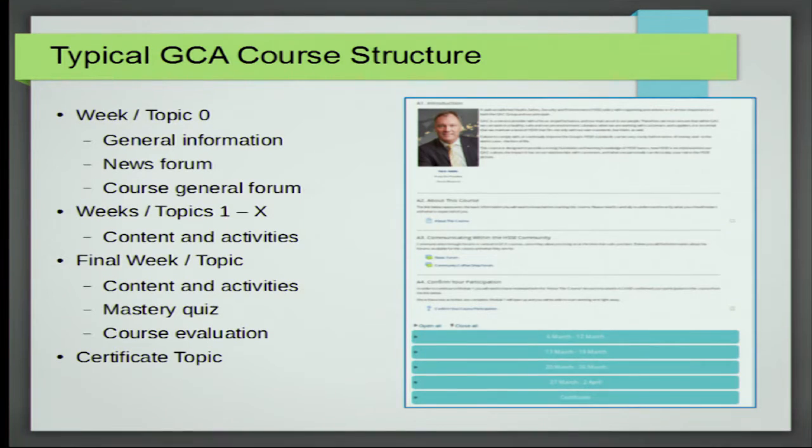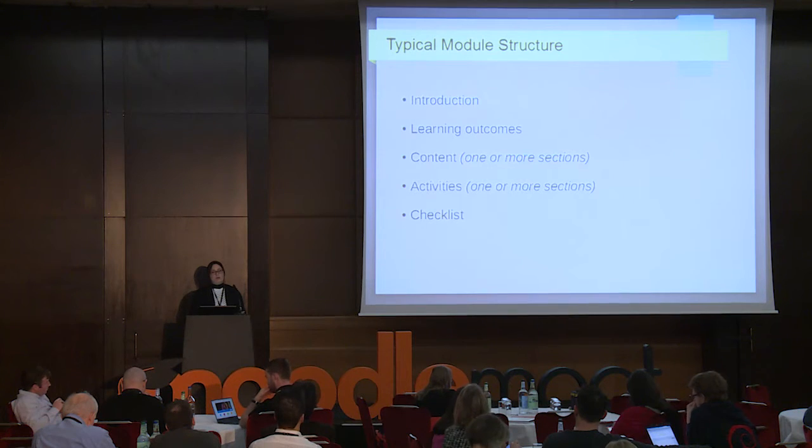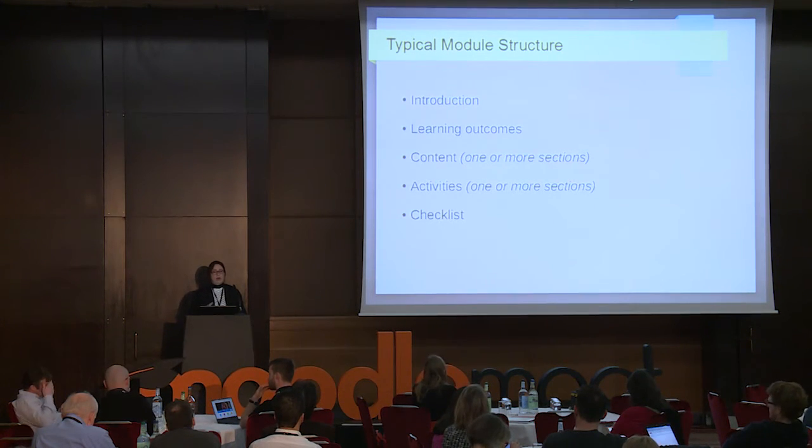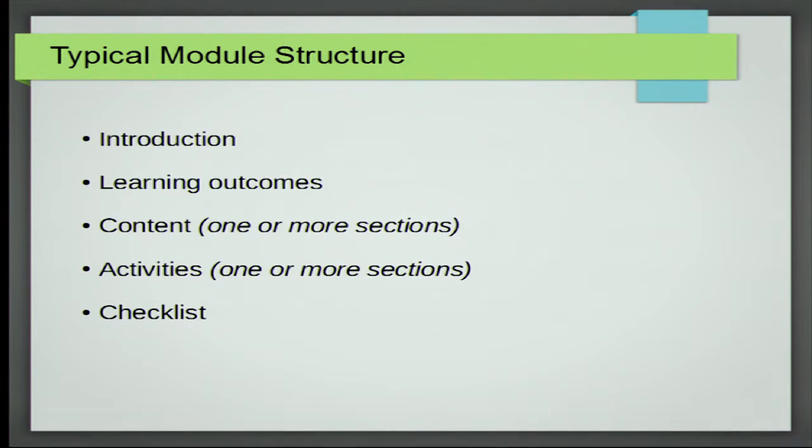In GCA we use a very simple, very clear, linear course design. We have a Week Zero with general information, a news forum and general forum. We have a couple of weeks or topics with content and activities, and the final topic contains activities, a mastery quiz, a course evaluation, and a certificate topic. The typical structure of a module contains introduction, learning outcome, content, one or more sections, activities, and a checklist.